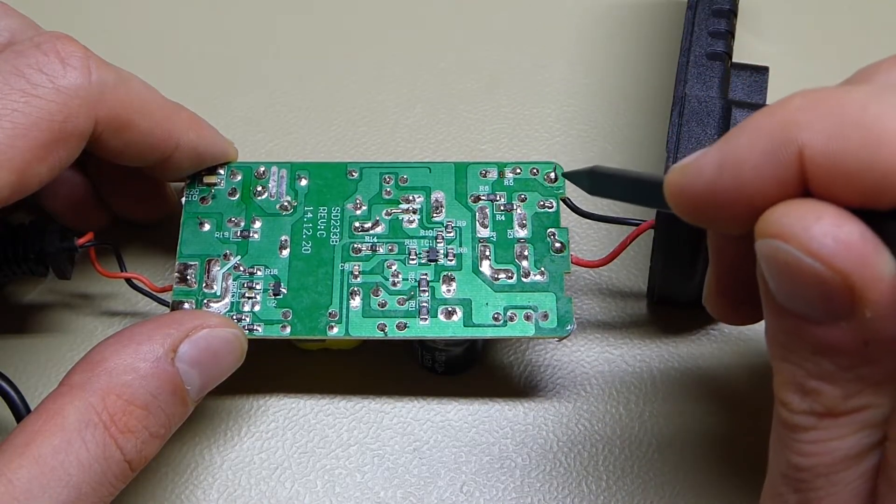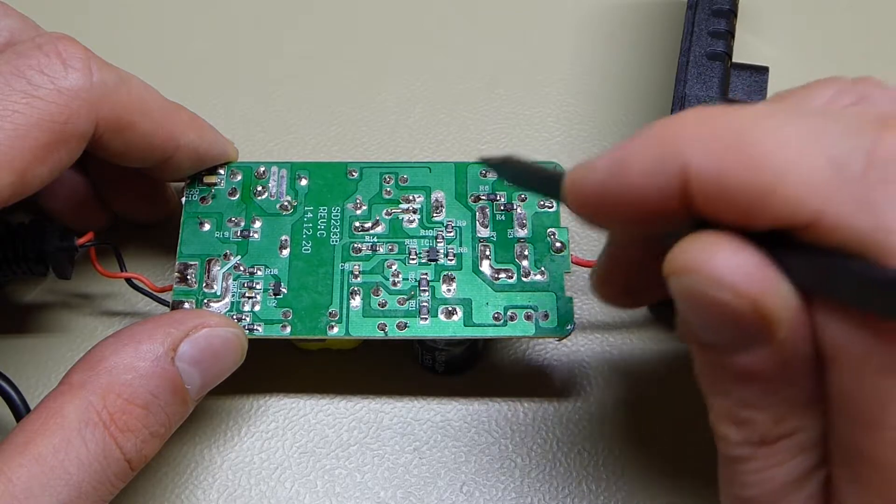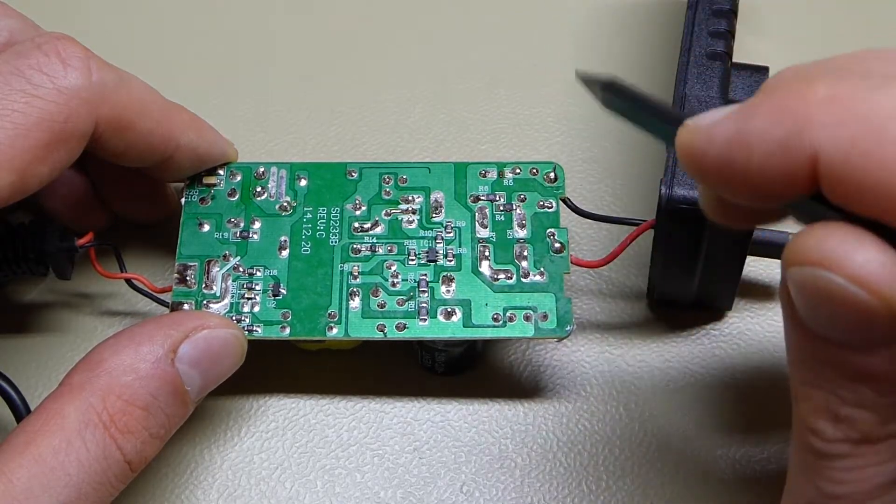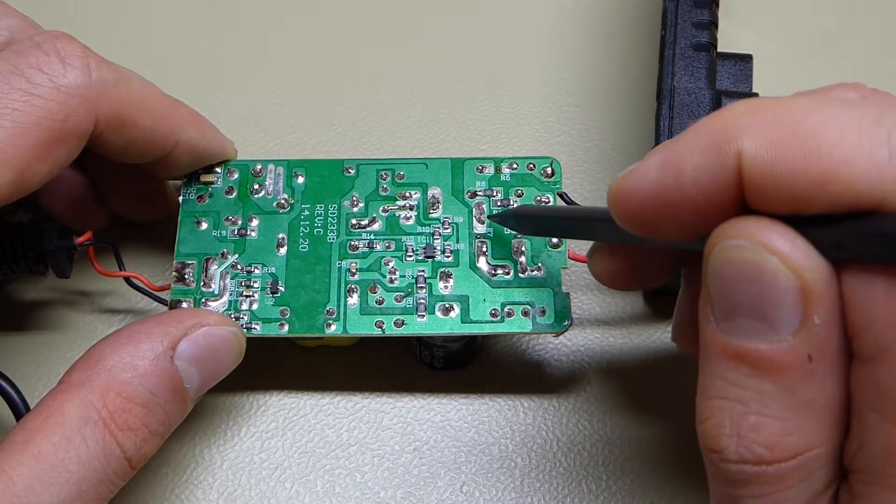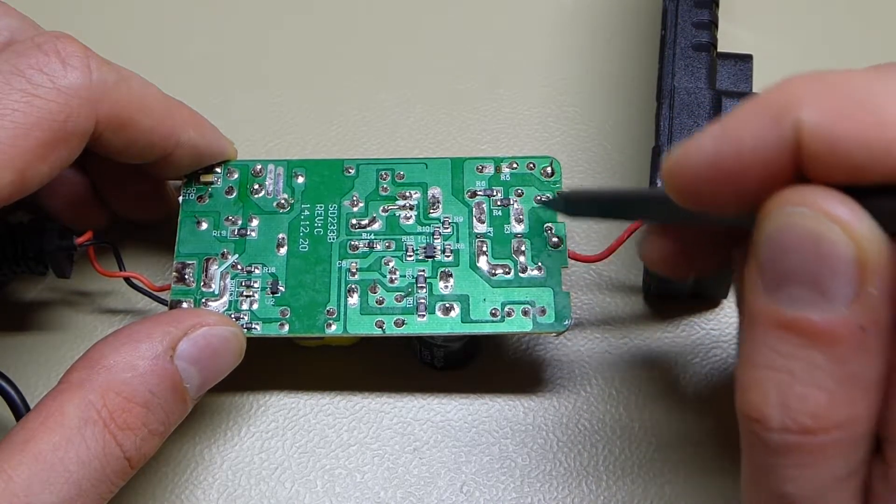So I just used the multimeter and beeped out all the connections, tested the fuse and everything. And when I got to the common mode choke, it turns out that there is no continuity on either of the windings of the choke.